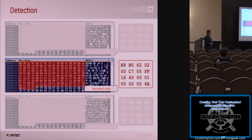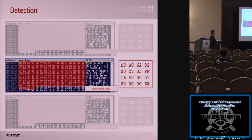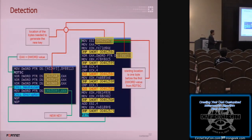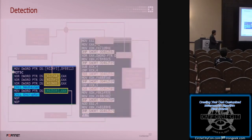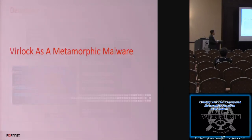For detection: if you want to detect this malware, do not try to detect this particular encrypted part, because it is encrypted with the old key in one sample and a new key in another — they always change. But the decrypted version is always the same. So if you want to make a detection, look for the part of the code that generates the new key.